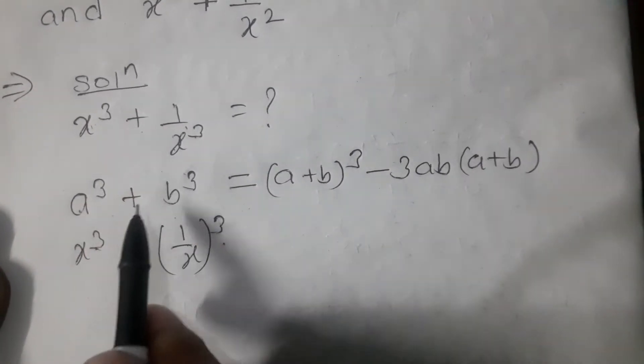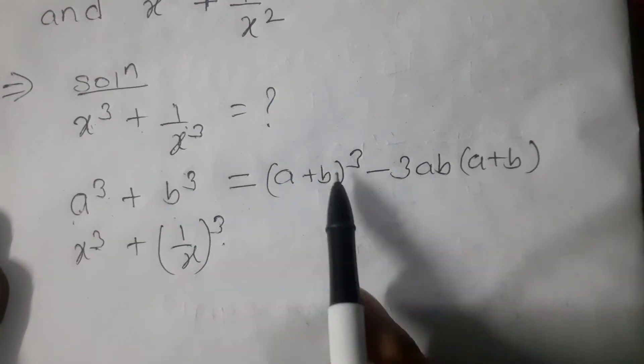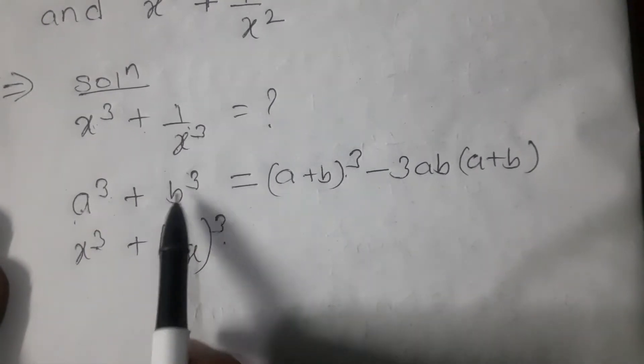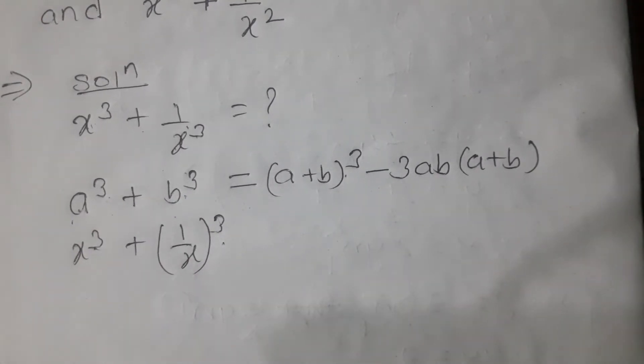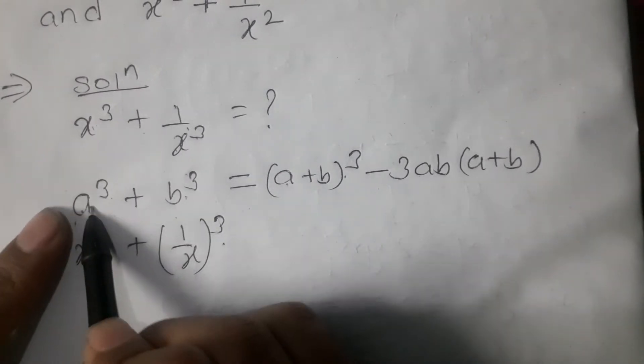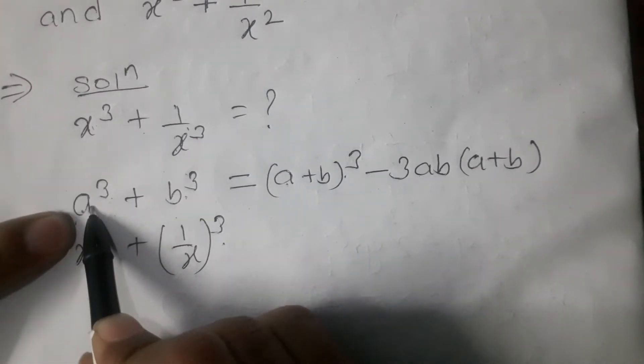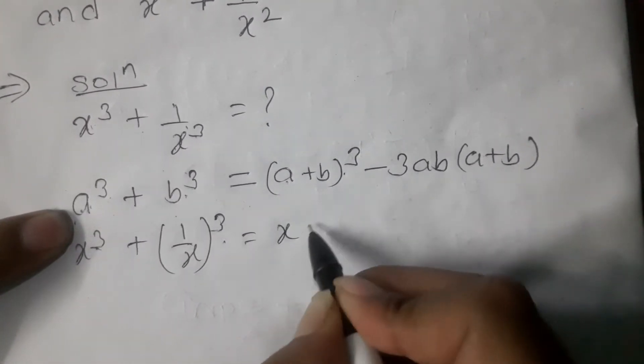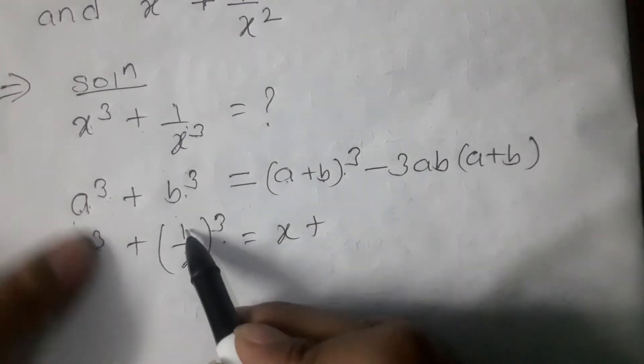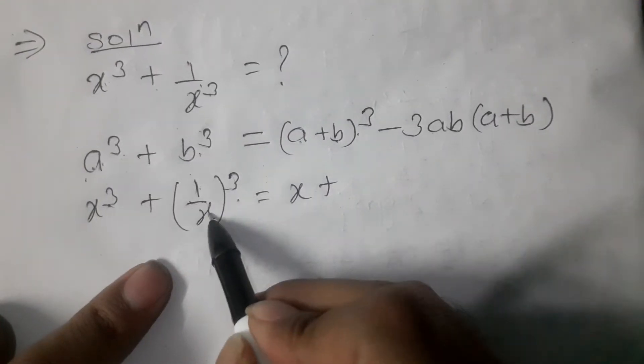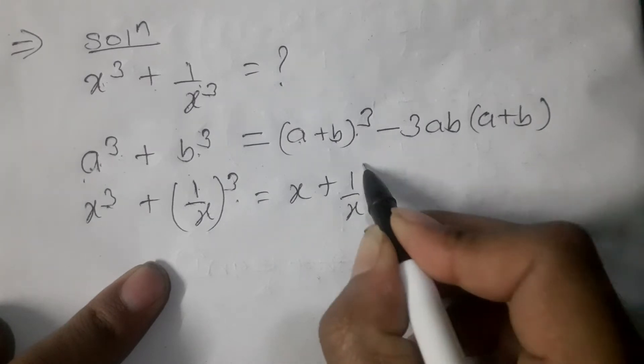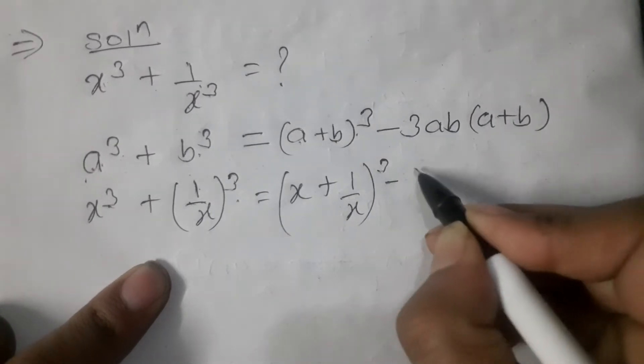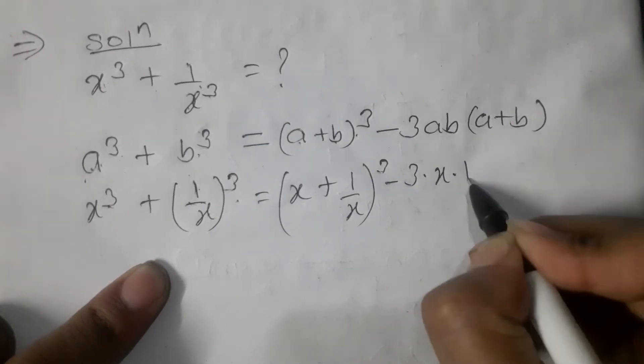We will use this formula. a³ plus b³. The formula is a³ is x and b³ is 1 by x, then the formula is x plus 1 by x.